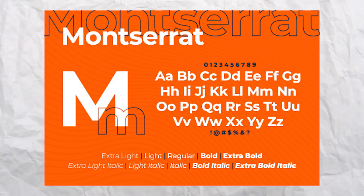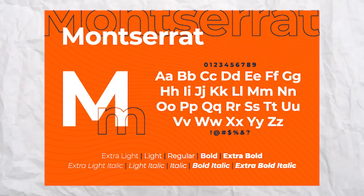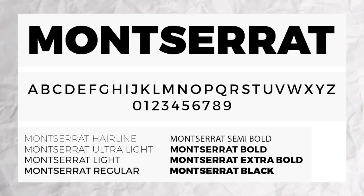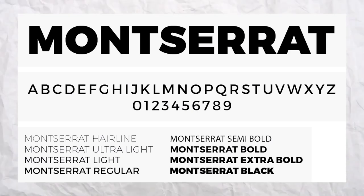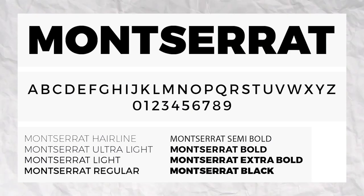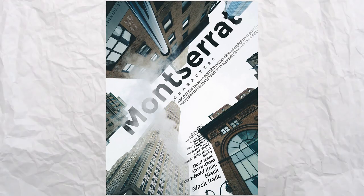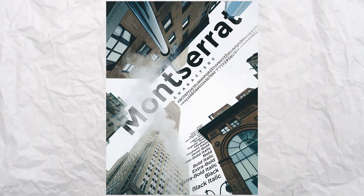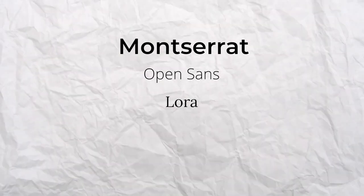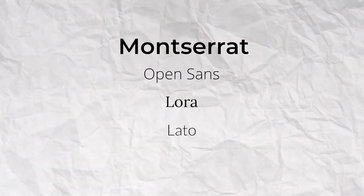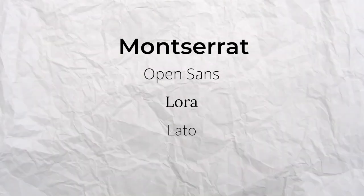Number three is Montserrat. Introduced in 2011 and featuring highly geometrical and legible characters, it's favored by many designers. As an open-source font with elegant, stable, and commercially driven aesthetics, it sets itself apart from other font styles and offers a compelling alternative to the premium font Gotham. It can be paired with Open Sans, Lora, or Lato, and is one of the presenter's personal favorite fonts.